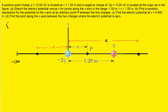To understand part A, we have to remember that the electric potential produced by a point charge is equal to a constant times the value of the charge divided by the distance from the charge to whichever point we're examining. We're going to do three calculations: for x between negative 1.5 and 0, for x from 0 to 1.2, and for x greater than 1.2.